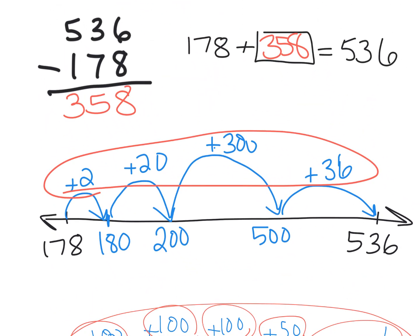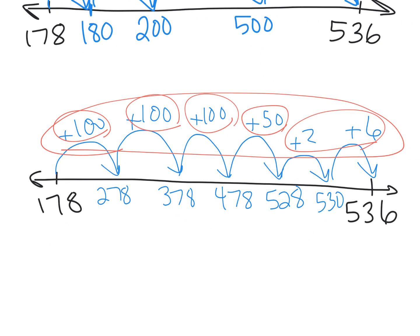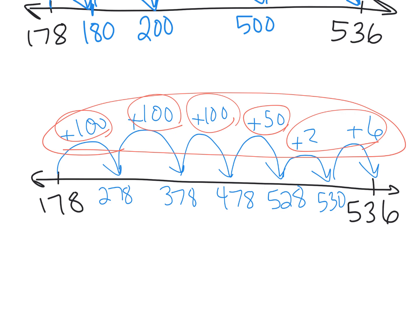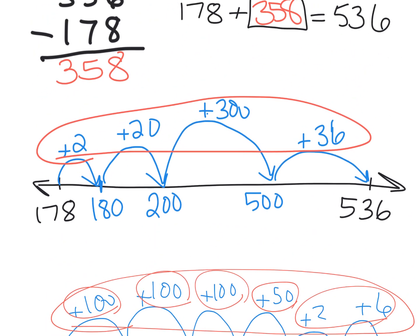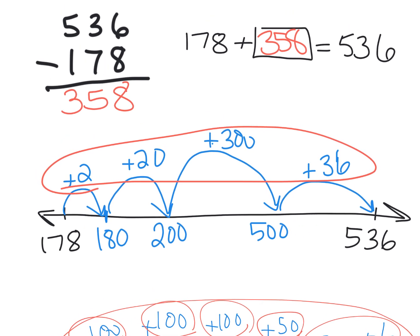But I just wanted to show you that students can choose their hops. Whatever is comfortable for them, let them do it. As long as they're doing it correctly, let them choose how they're going to do their hops. And that wraps up the empty number line.